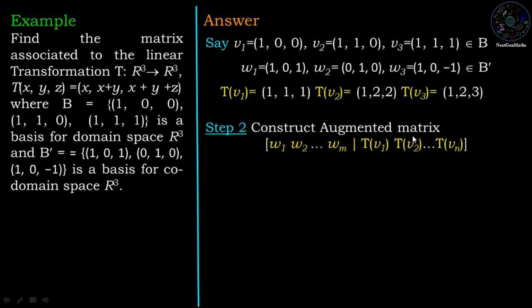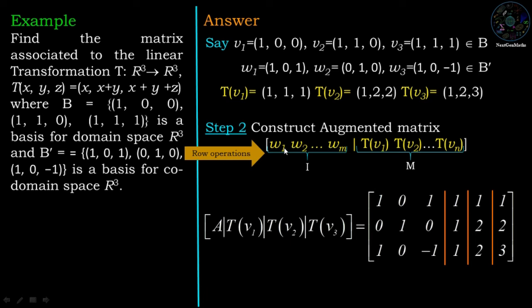Now step 2: construct the augmented matrix [W1, W2, W3 | Tv1, Tv2, Tv3] and apply row operations so the first part converts into the identity matrix. W1 is the first column: (1,0,1). W2 is the second column: (0,1,0). W3 is the third column: (1,0,-1). Tv1 is the fourth column: (1,1,1). Tv2 is the fifth column: (1,2,2). Tv3 is the sixth column: (1,2,3).